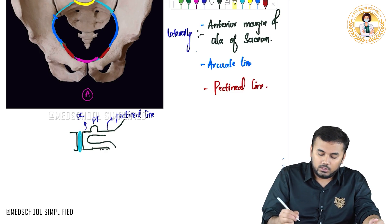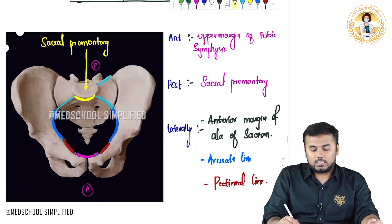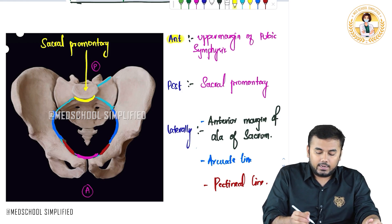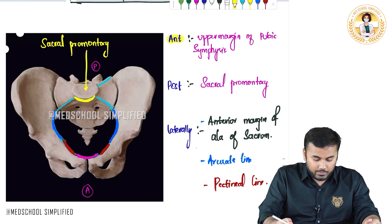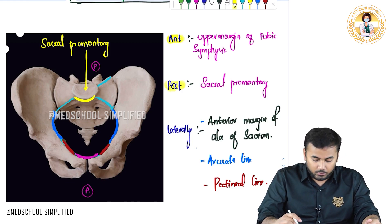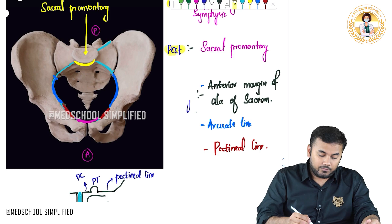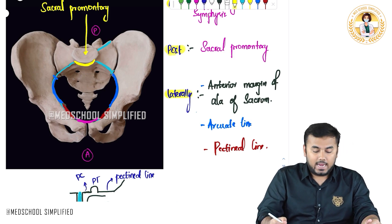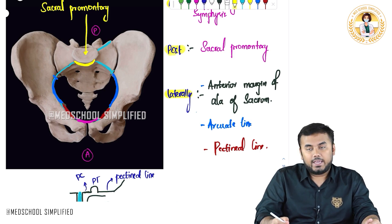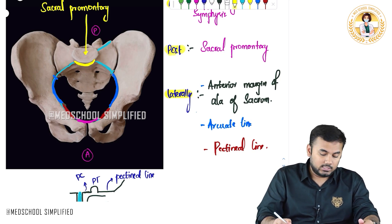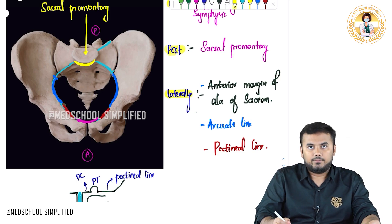To summarize the borders of the pelvic inlet: anteriorly we have the upper margin of the pubic bone; posteriorly we have the sacral promontory; and laterally we have three important structures — the anterior margin of the ala of the sacrum, the arcuate line, and the pectineal line.